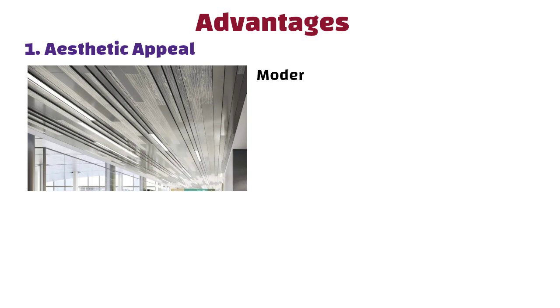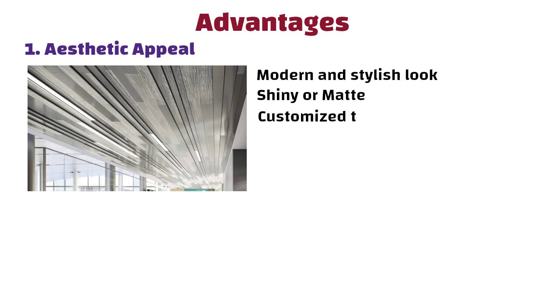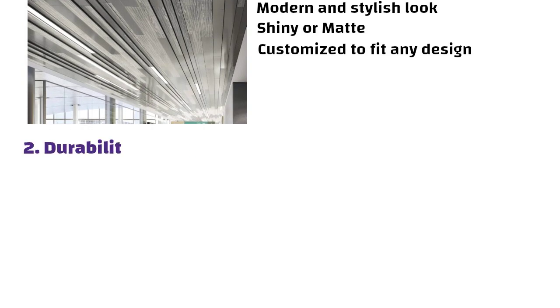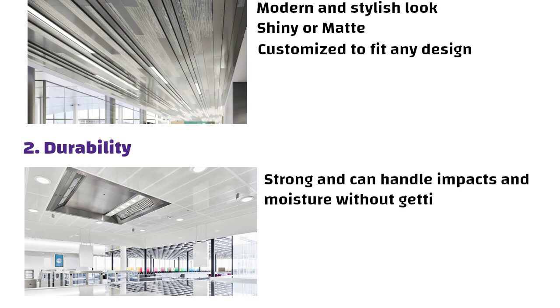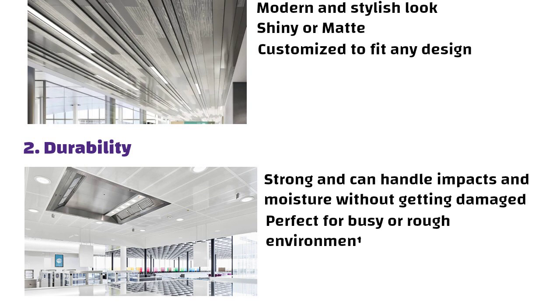Now let us understand advantages of metal false ceilings. First, Aesthetic appeal. Metal ceilings have a modern and stylish look. They come in different finishes like shiny or matte and can be customized to fit any design you want. Second, Durability. Metal ceilings are strong and can handle impacts and moisture without getting damaged, making them perfect for busy or rough environments.